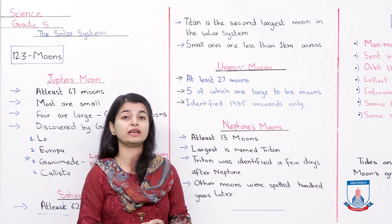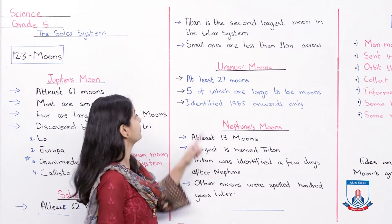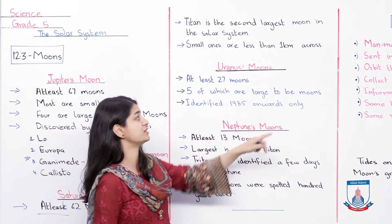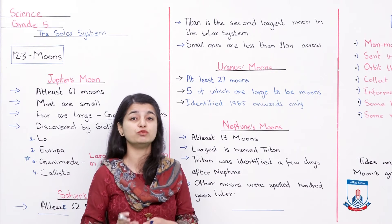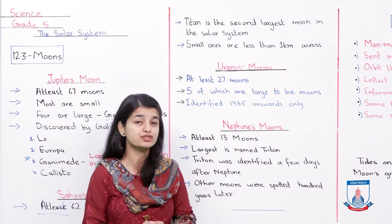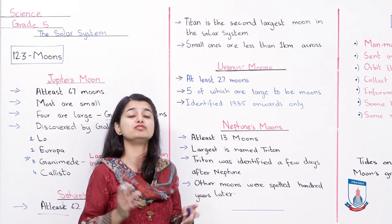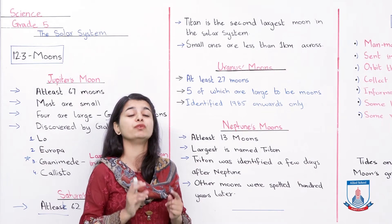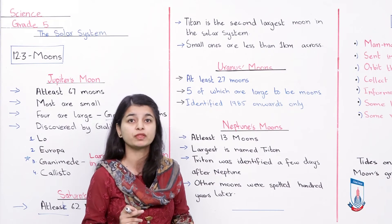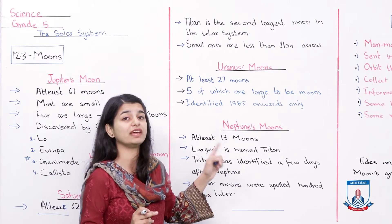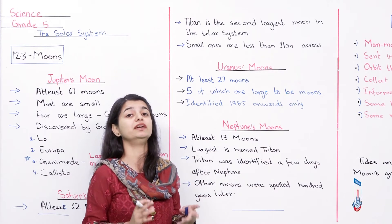Now we can read about Uranus's moons. Uranus ki kitne moons hain? Kam az kam 27. 5 of which are large to be called moons — 5 jo hain woh bohot zyadha bade hain. They are much larger than the usual size of moons identified in most planets. 5 of Uranus's moons are too big for that, phir bhi unko moons ki category mein hi daalte hain. Moon ki definition hoti hai woh entity jo kisi planet ke irgird orbit karti hai, so kyunke ye wale bhi wahi karte hain, is wajah se unko moon ki category mein daala hua hai.